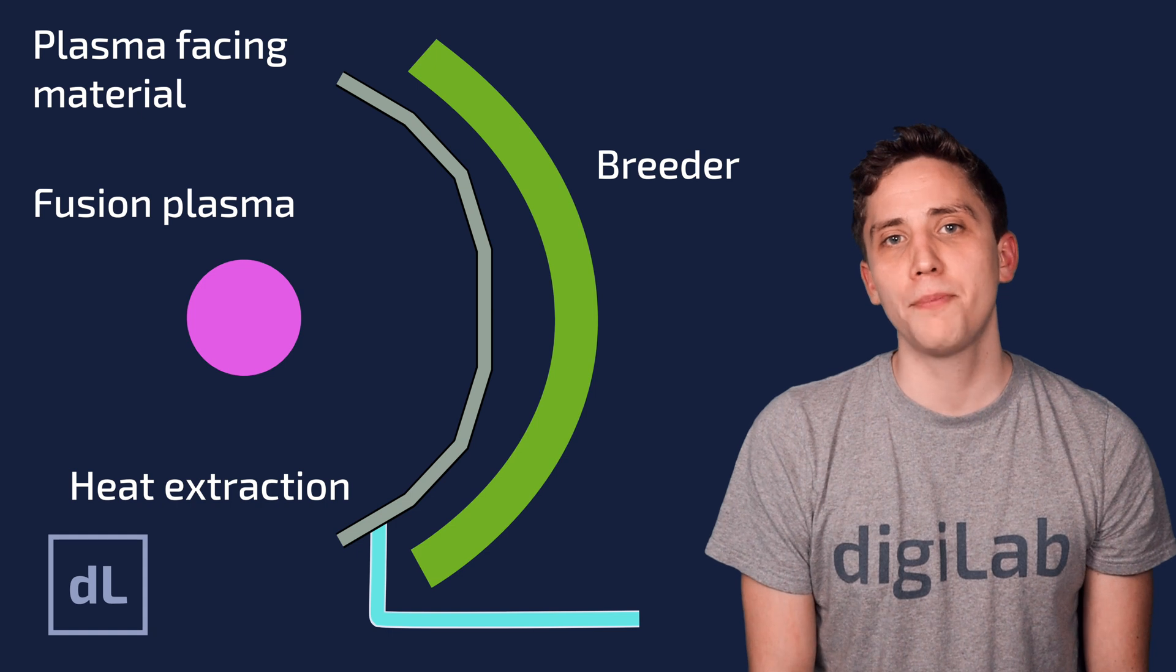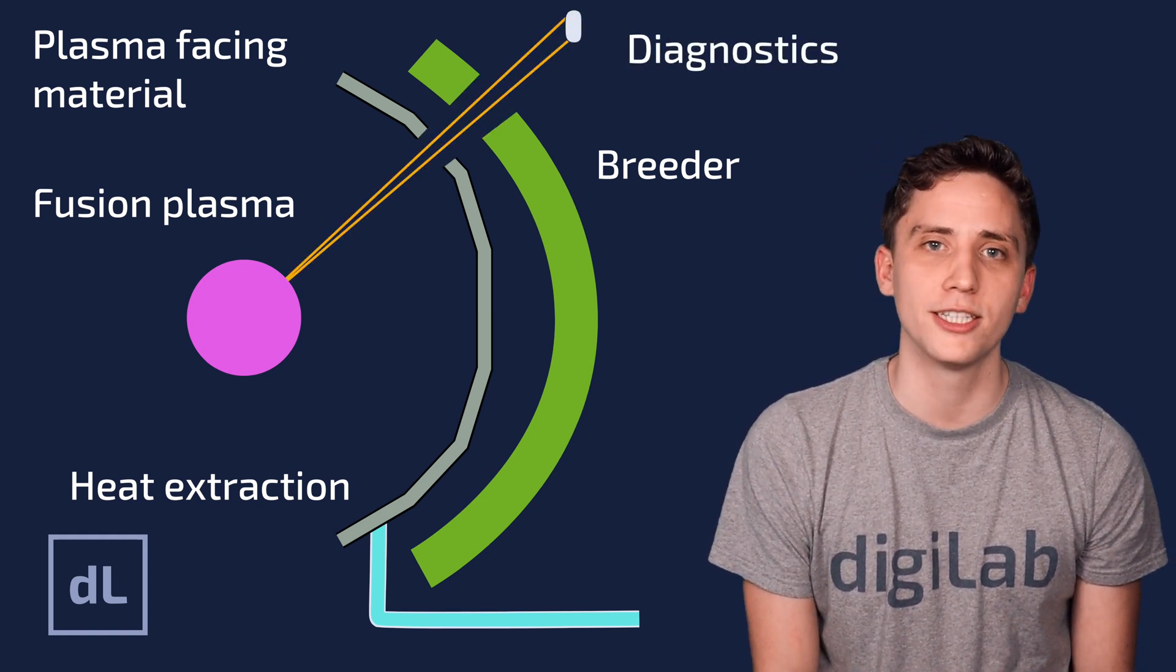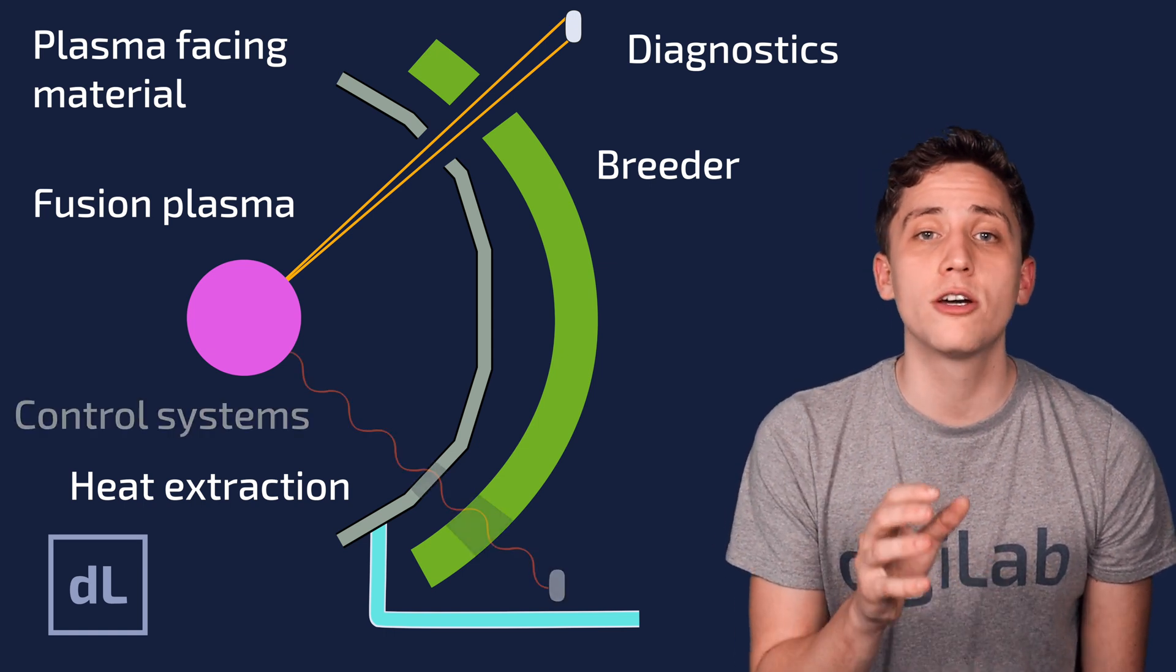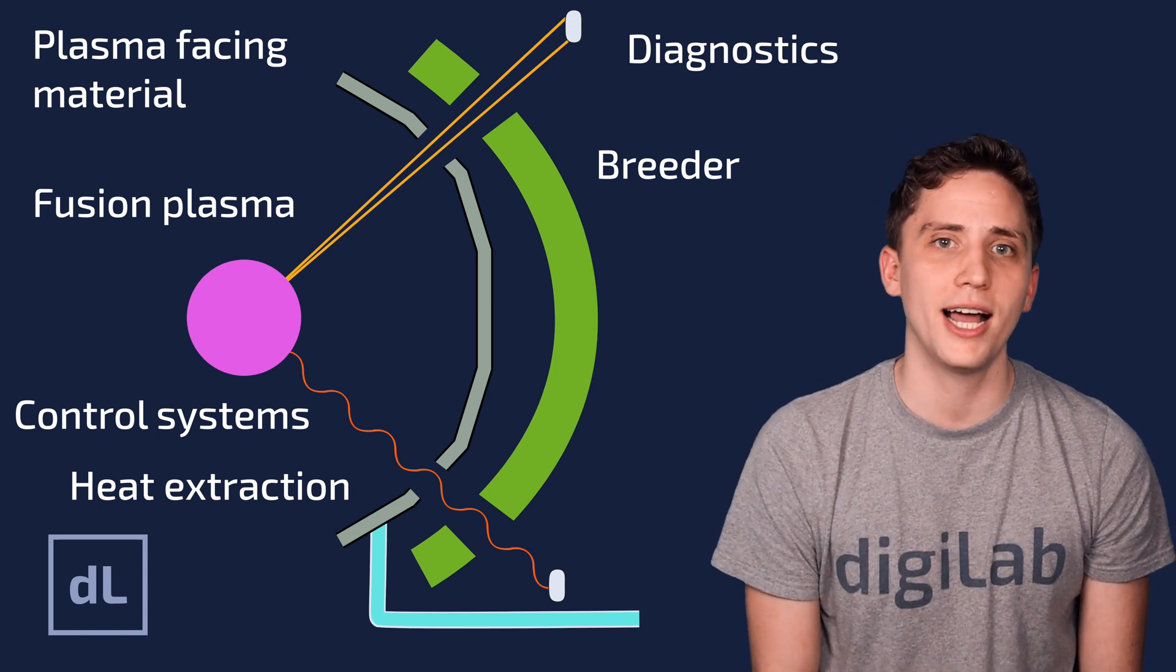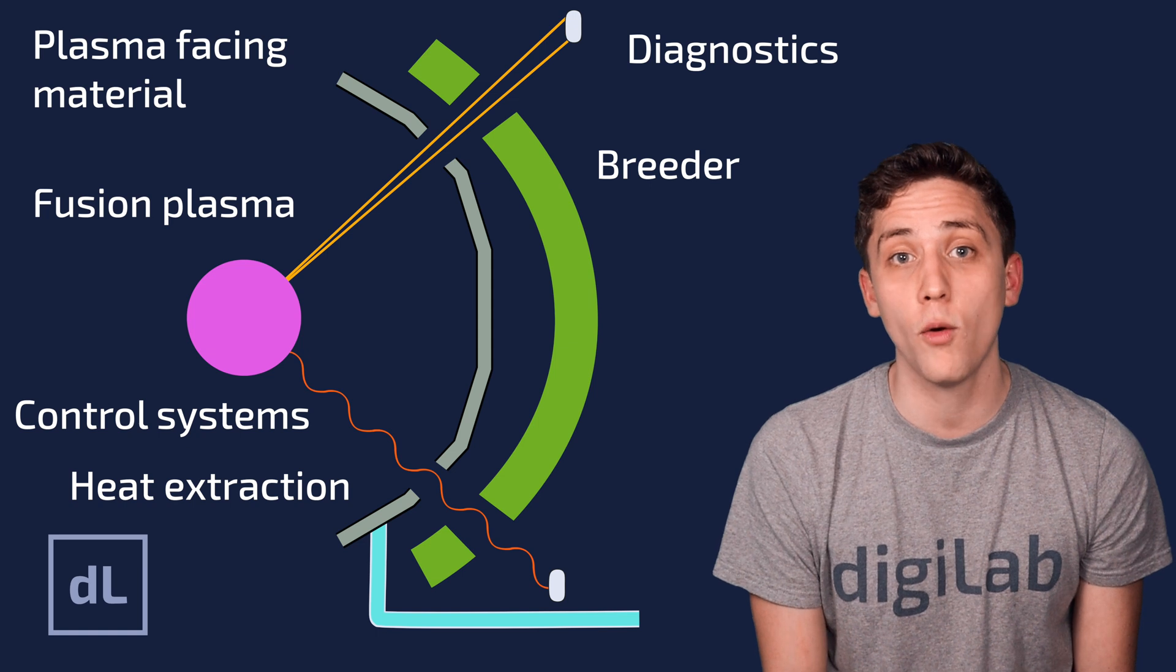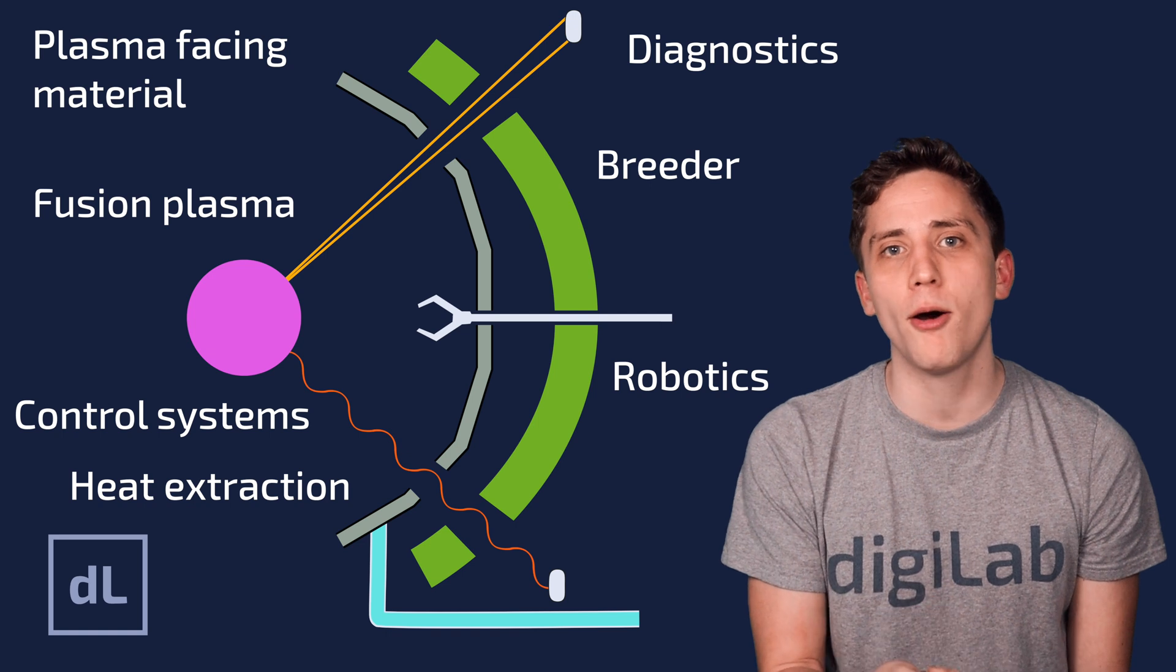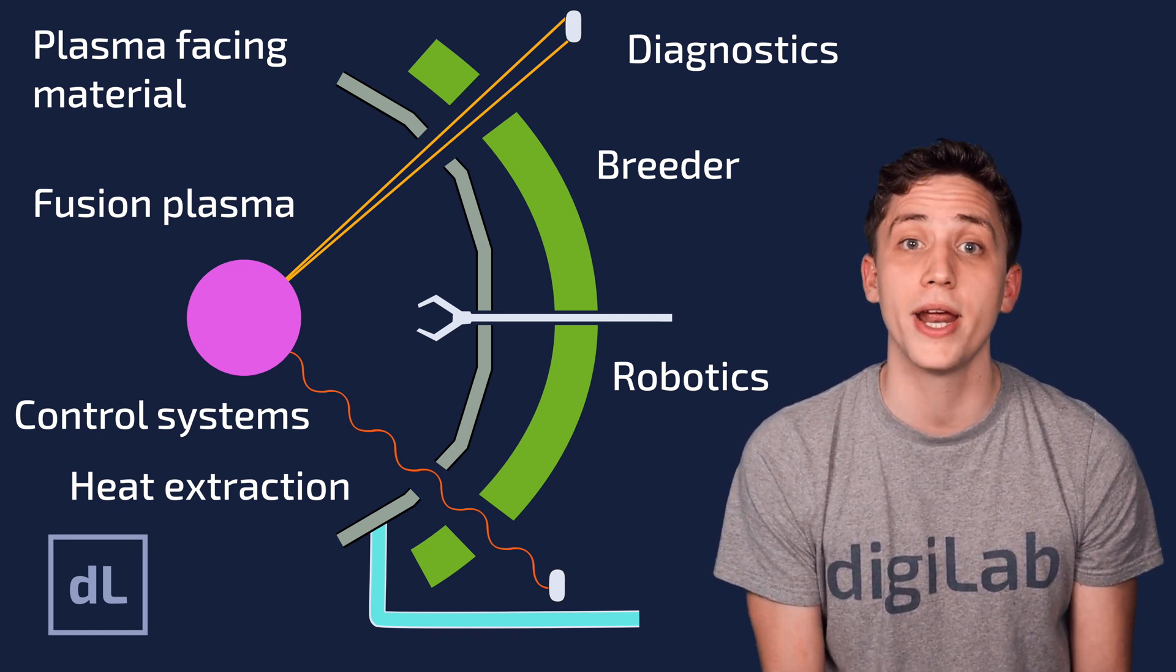Finally, any fusion power plant will need diagnostics, which constantly monitor the plasma and different components in the machine. And in conjunction with these diagnostics, they'll need to be control systems, which decide how much fuel to inject into the plasma, how much heat to inject, how much current to put through your magnetic coils, for example, and so on. Future machines will also need robotic systems to maintain parts of the plant that can't be accessed by humans due to, for example, radiation doses.